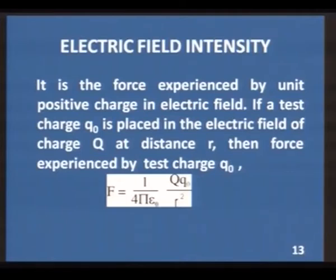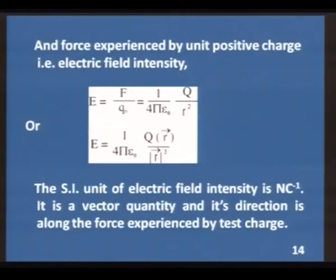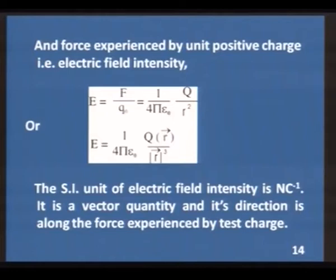The intensity of the electrostatic force can be expressed as electric field intensity — the force experienced by a unit positive charge in an electric field. If a test charge Q₀ is placed in the field of charge Q at distance r, the force is (1/4πε₀) × QQ₀/r², and the electric field intensity E = (1/4πε₀) × Q/r². Its SI unit is Newton per coulomb. It is a vector quantity whose direction is along the force on the test charge.